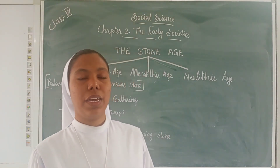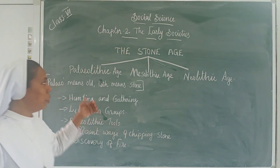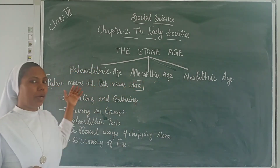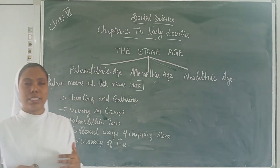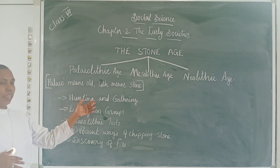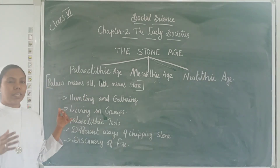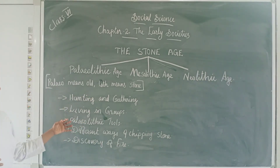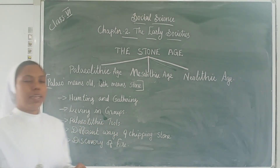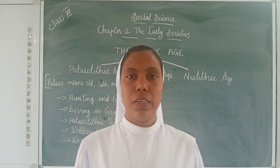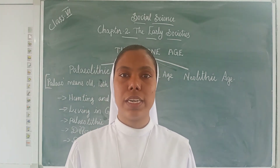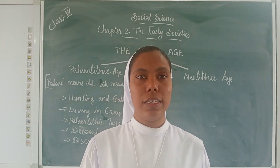In this class, we studied about the Stone Age, which is divided into three periods: the Paleolithic Age, the Mesolithic Age, and the Neolithic Age. We discussed how people lived in the Paleolithic Age — they were hunters and gatherers, they started living in small groups, they made stone tools, and they discovered fire. In the next class, we will discuss the Mesolithic Age and the Neolithic Age.